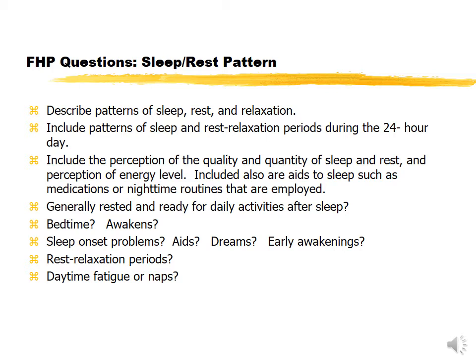What's nice about the functional health pattern is that you're not getting just an isolated snapshot — you're asking about the general pattern of their activity. Ask about quality and quantity of sleep and how they feel when they wake up. Ask about average bedtime, average time of awakening, any problems going to sleep, medications or sleep aids, and their dreams. Early awakening is a common type of insomnia as people get older. Ask about any rest or relaxation periods and daytime fatigue or naps.